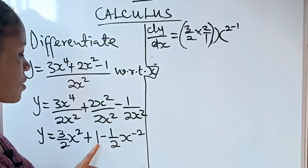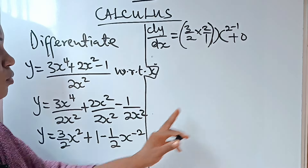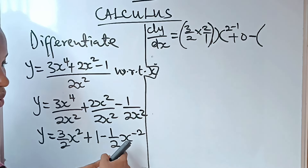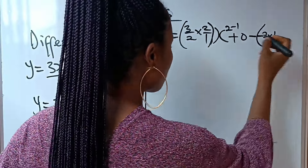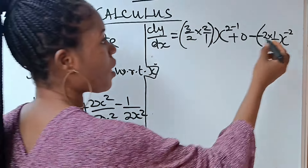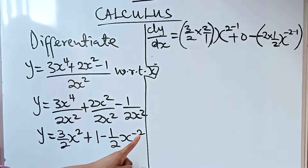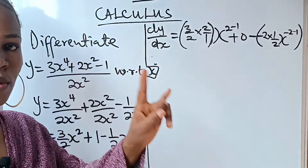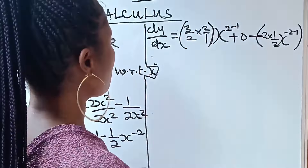Minus: we now differentiate the last term. The power minus 2 multiplies the coefficient 1 over 2, so we have minus 2 times 1 over 2, then write x to the power of minus 2, and subtract 1 from the power, giving minus 2 minus 1. So we are done with the differentiation.